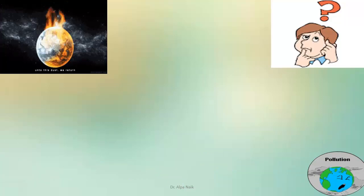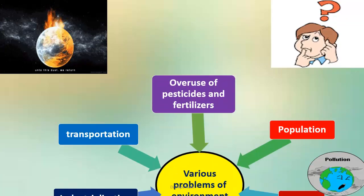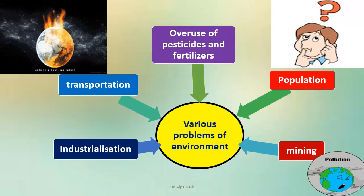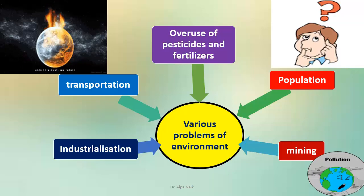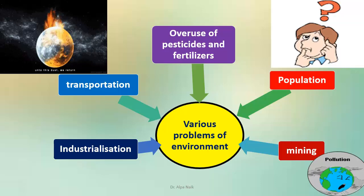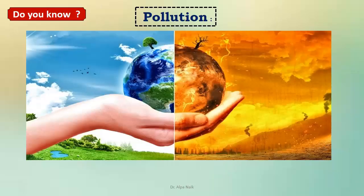Why did it happen so? Because there are various problems of environment: industrialization, transportation, overuse of pesticides and fertilizers, population, money — and all these problems together lead to the very big problem of pollution. Do you know what is pollution?